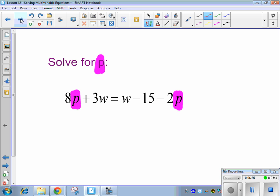Let's try another one. So, 8p plus 3w equals w minus 15 minus 2p. Sort of difficult to see those pink parts are p's. And we are solving for p's.